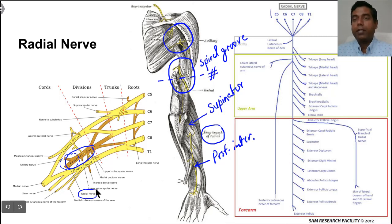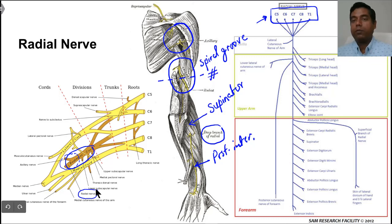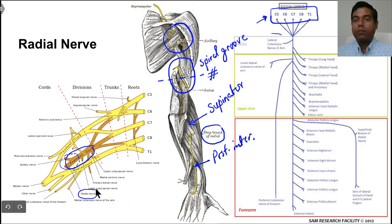The line diagram shows the roots from which the radial nerve gets its fibers. All the roots of the brachial plexus — C5, 6, 7, 8, and T1 — contribute fibers to the radial nerve. In the axilla, the first branch arising from the radial nerve is the lateral cutaneous nerve of the arm. It also supplies the medial head and long head of triceps from the axilla itself.